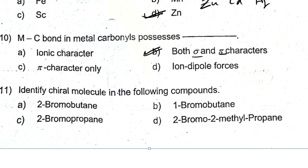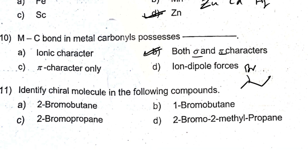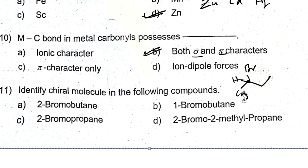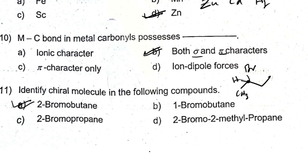Identify the chiral molecule in the following compounds. The first one would be 2-bromobutane. The second carbon bearing bromine is a chiral carbon because it contains hydrogen, bromine, CH₃, and CH₂CH₃ — four different groups. So question number one, 2-bromobutane, is the answer.